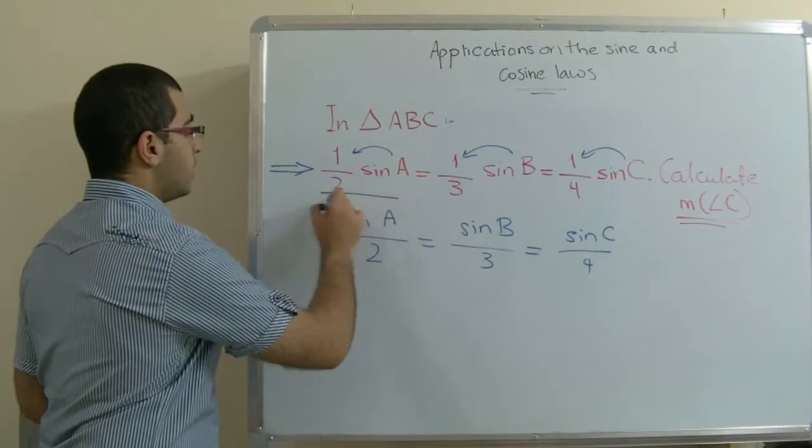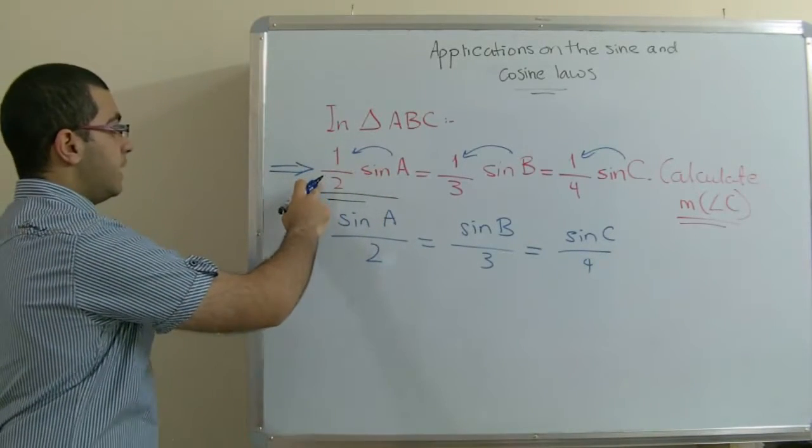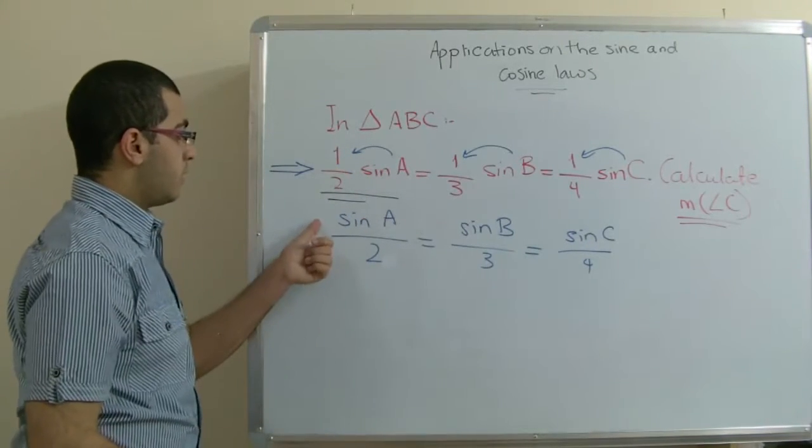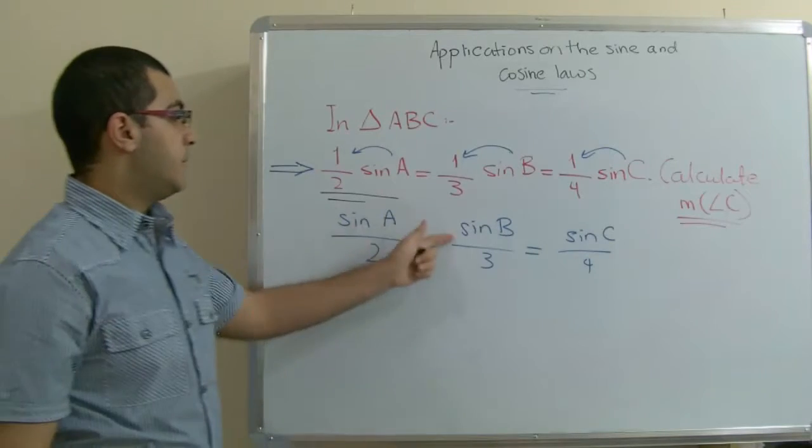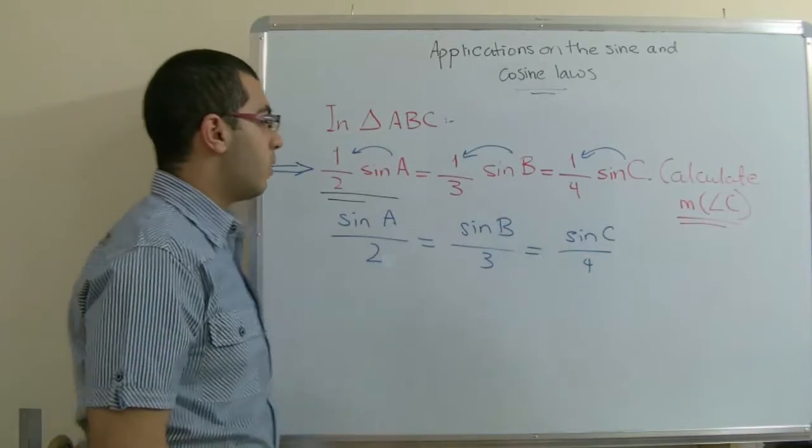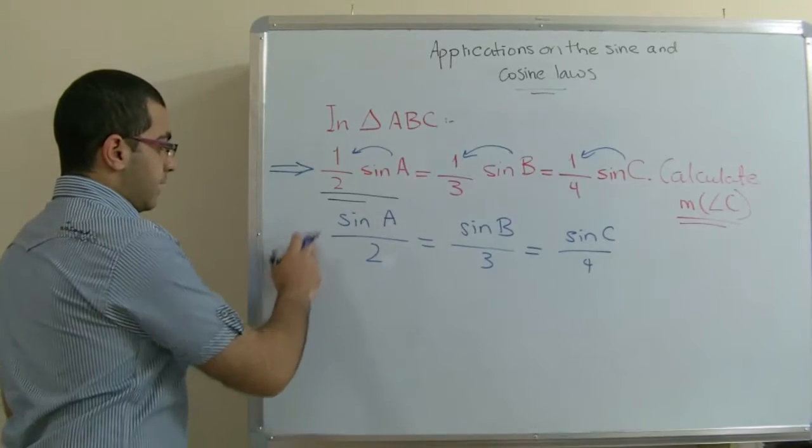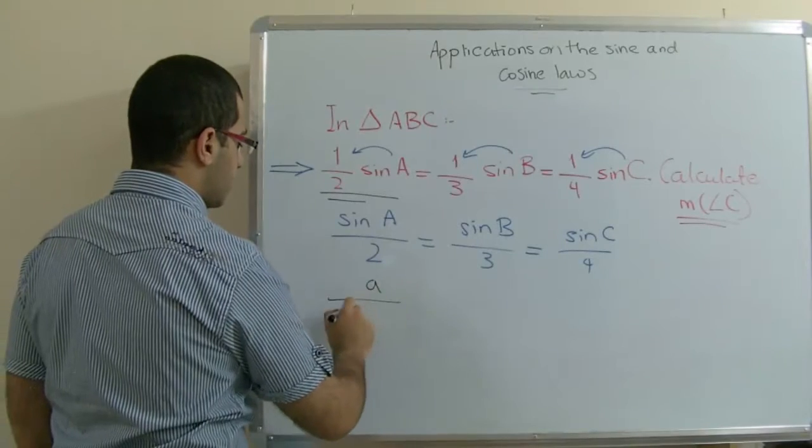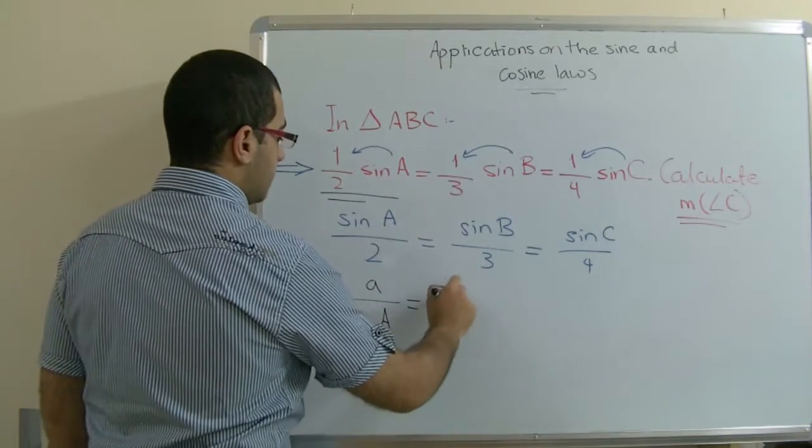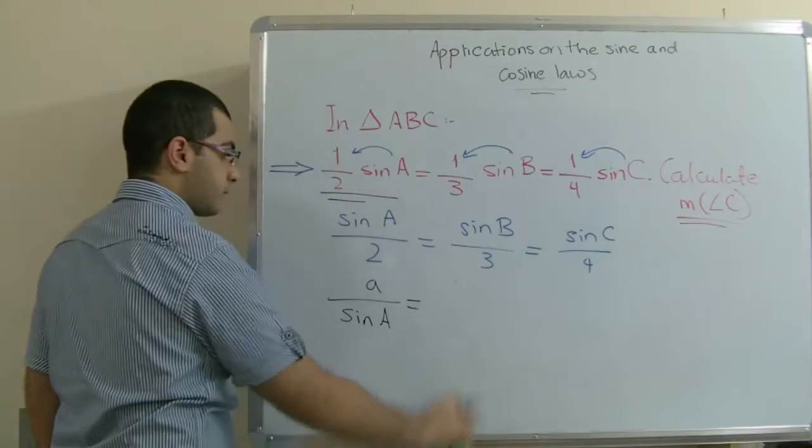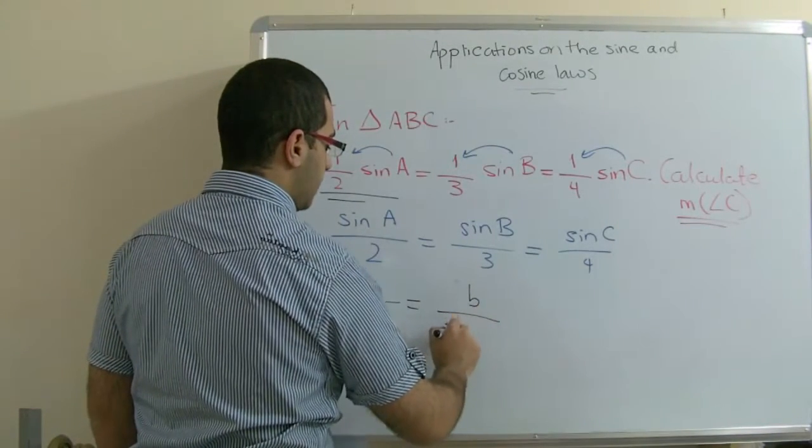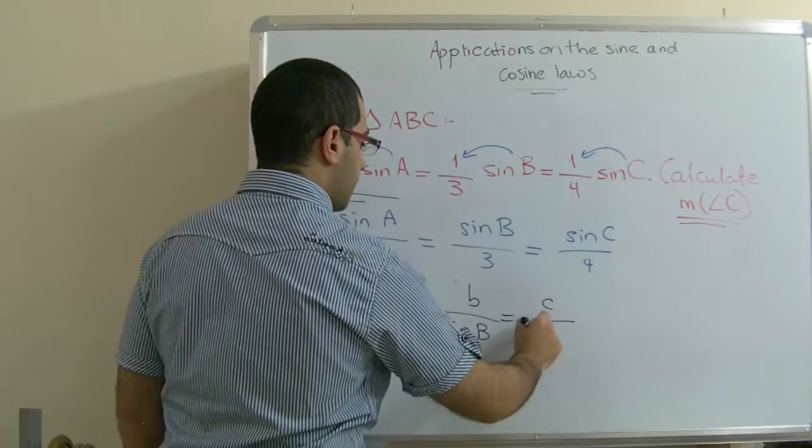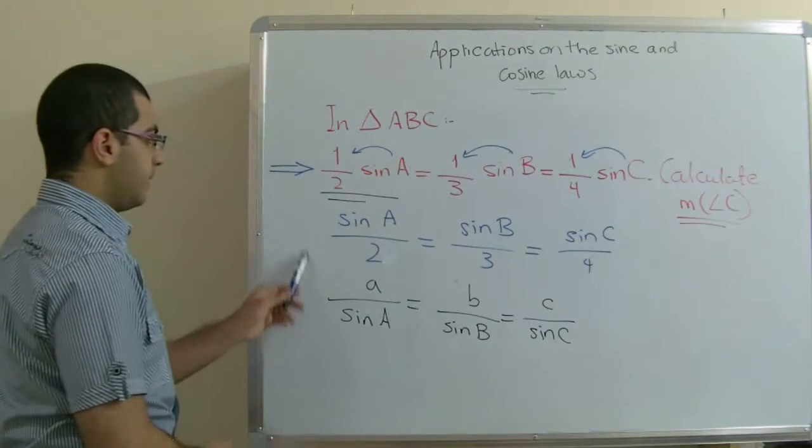Because in each part here the sine is multiplied by this fraction. Sine A over 2, sine B over 3 and sine C over 4. It looks like the sine law as the sine law equals A over sine A, B over sine B, and C over sine C. But it's flipped here.